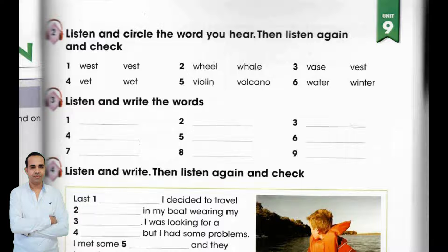Page 55, Exercise 2. Listen and circle the word you hear. Then listen again and check. 1. West, 2. Whale, 3. Vase, 4. Vet, 5. Volcano, 6. Winter.